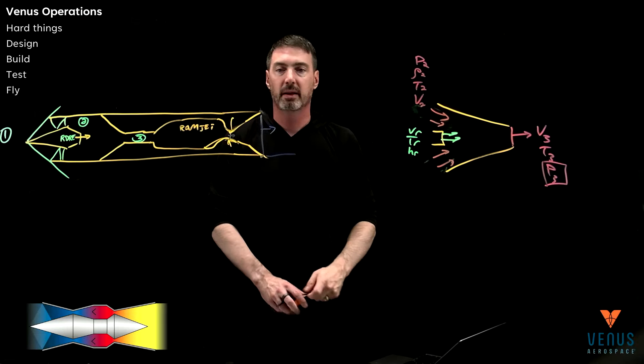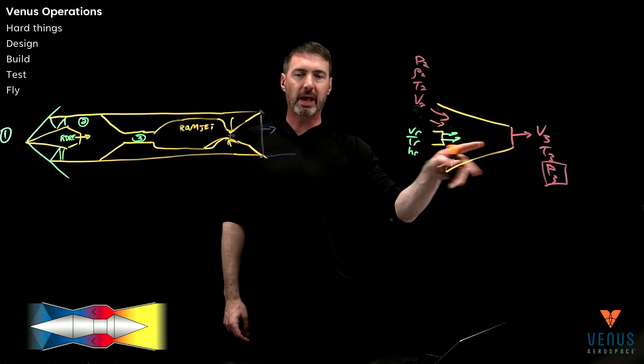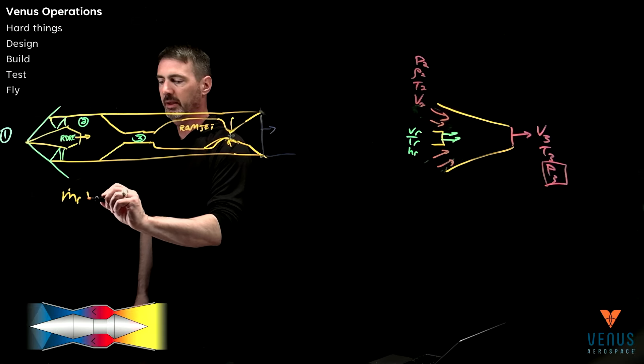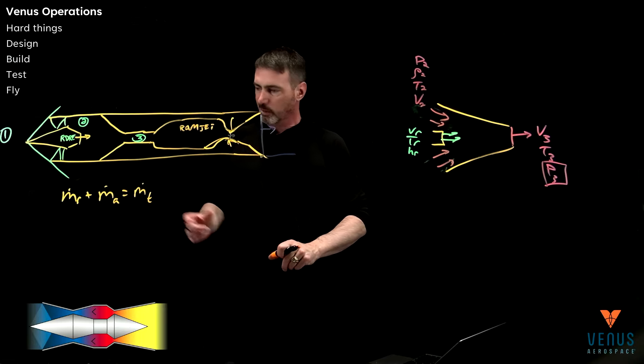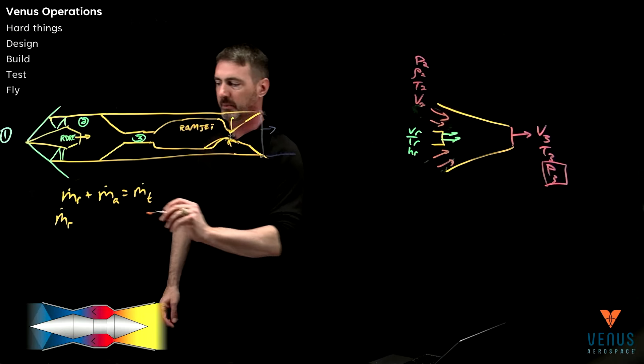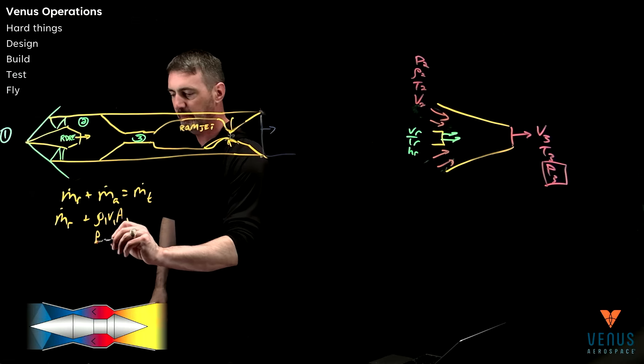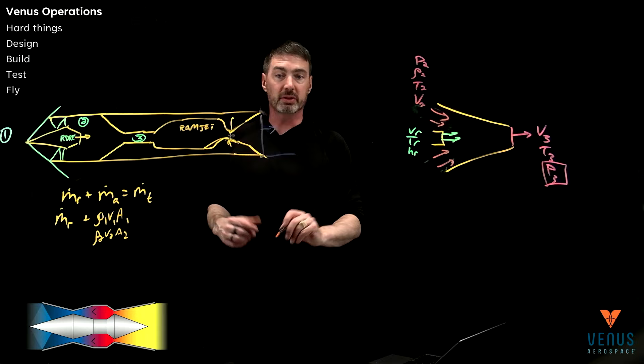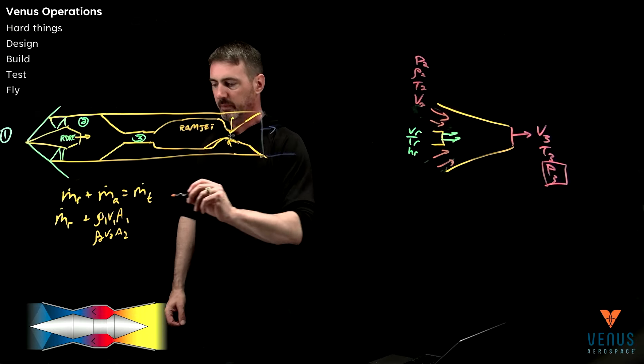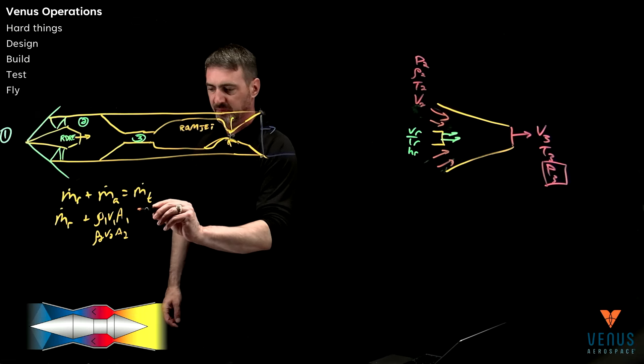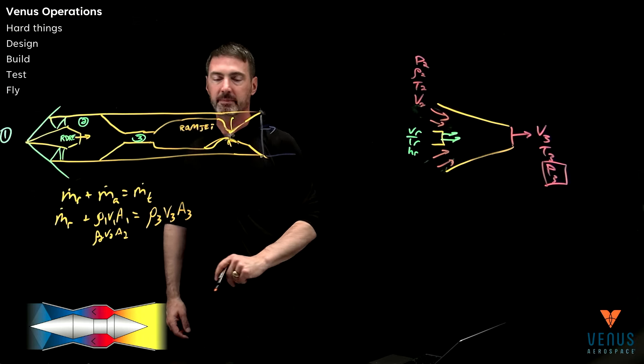Walking through that math with conservation of mass - on the right you add up the contribution of the rocket and the contribution of the air, and that's the total. I'm going to break this up: the mass flow rate of the rocket, the mass flow rate of the air, this is rho1 V1 A1, the capture area in front of the ramjet. It's also the same as rho2 V2 A2 because we haven't added or subtracted any more mass. And that's equal to the total, which is rho3 V3 A3. That's conservation of mass.